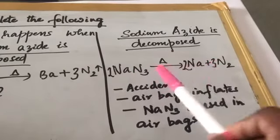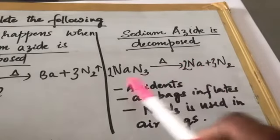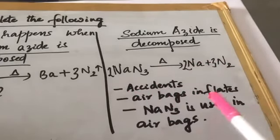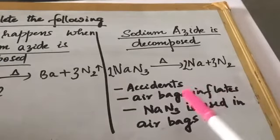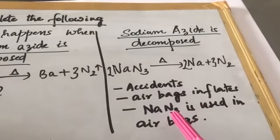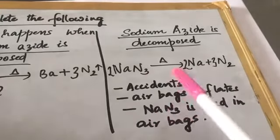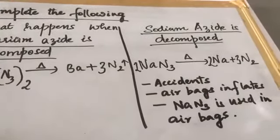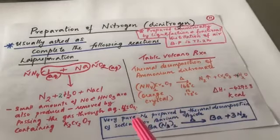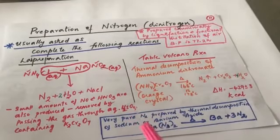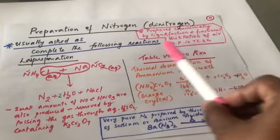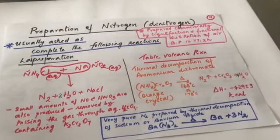When sodium azide is decomposed, dinitrogen also comes out. Sodium azide is used in airbags — when accidents happen, the airbag is inflated due to this reaction. So these are all the ways nitrogen can be prepared. For very pure dinitrogen, use the azide decomposition; for lab preparation, use the two lab methods; for commercial preparation, use fractional distillation of air.